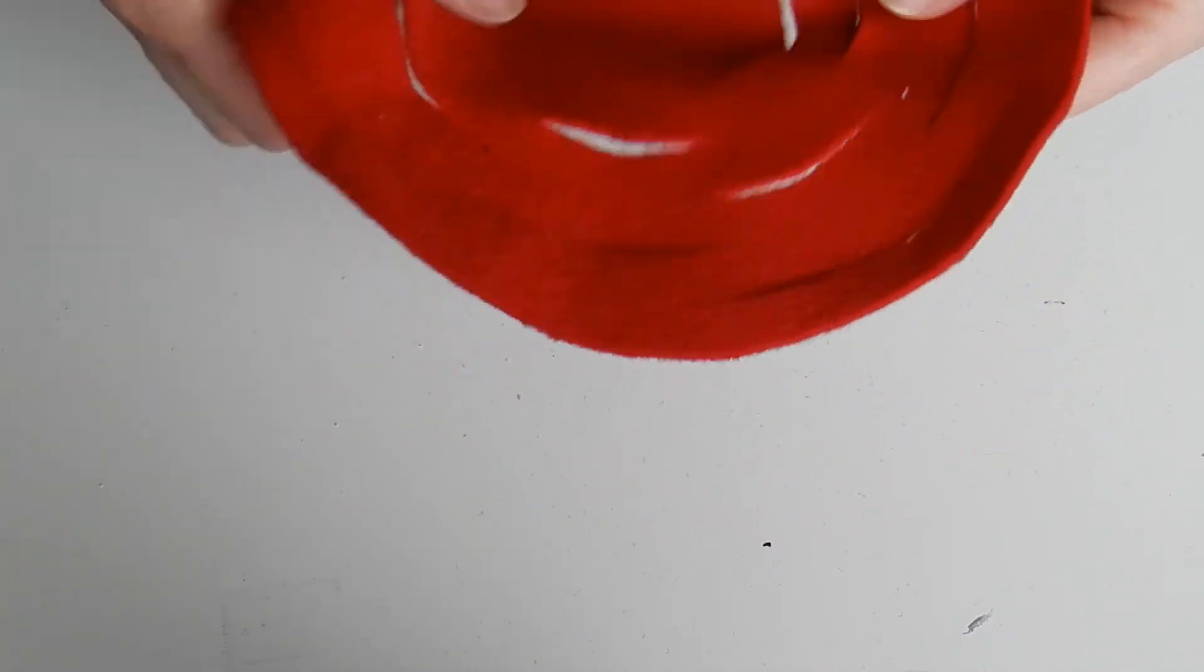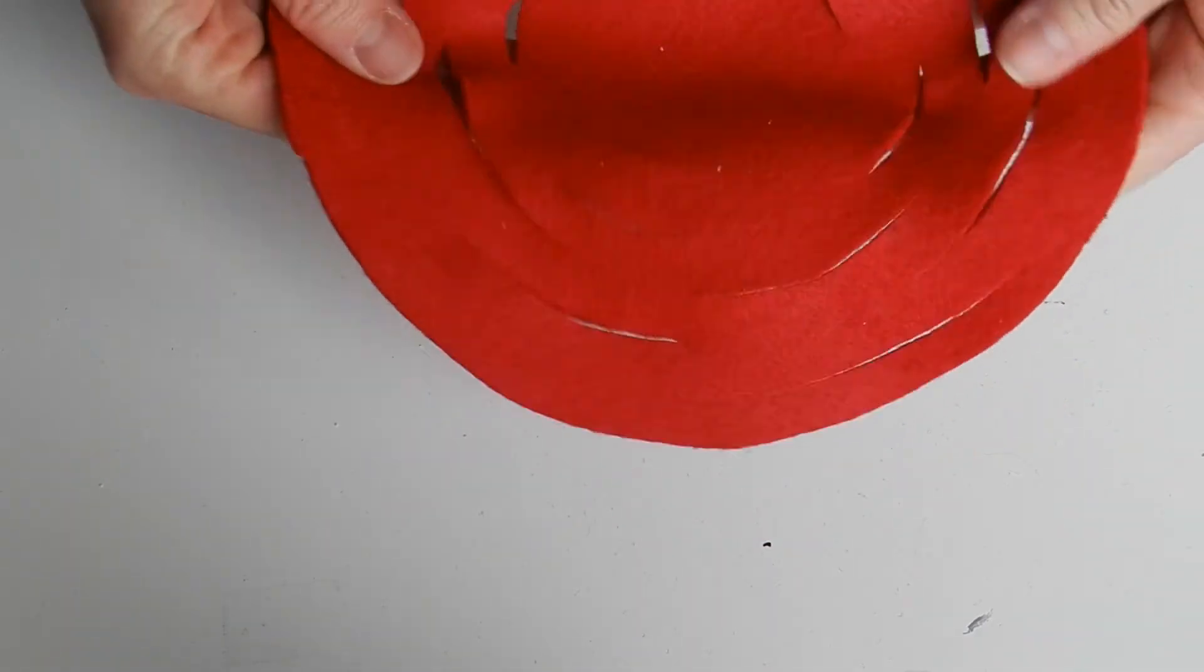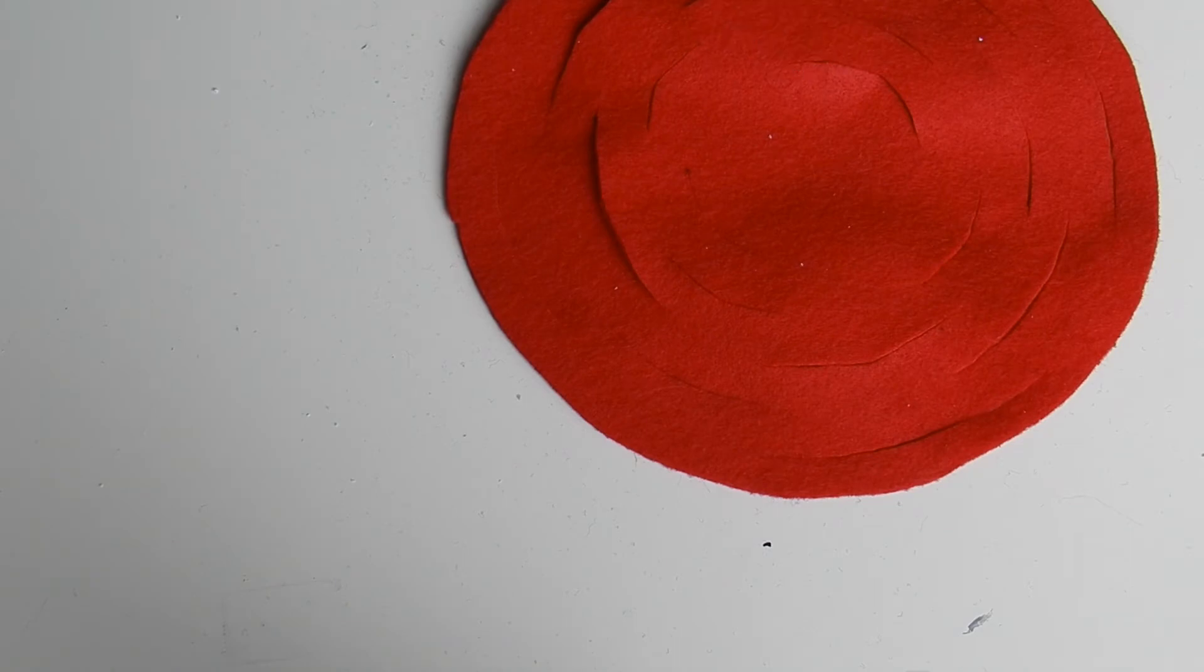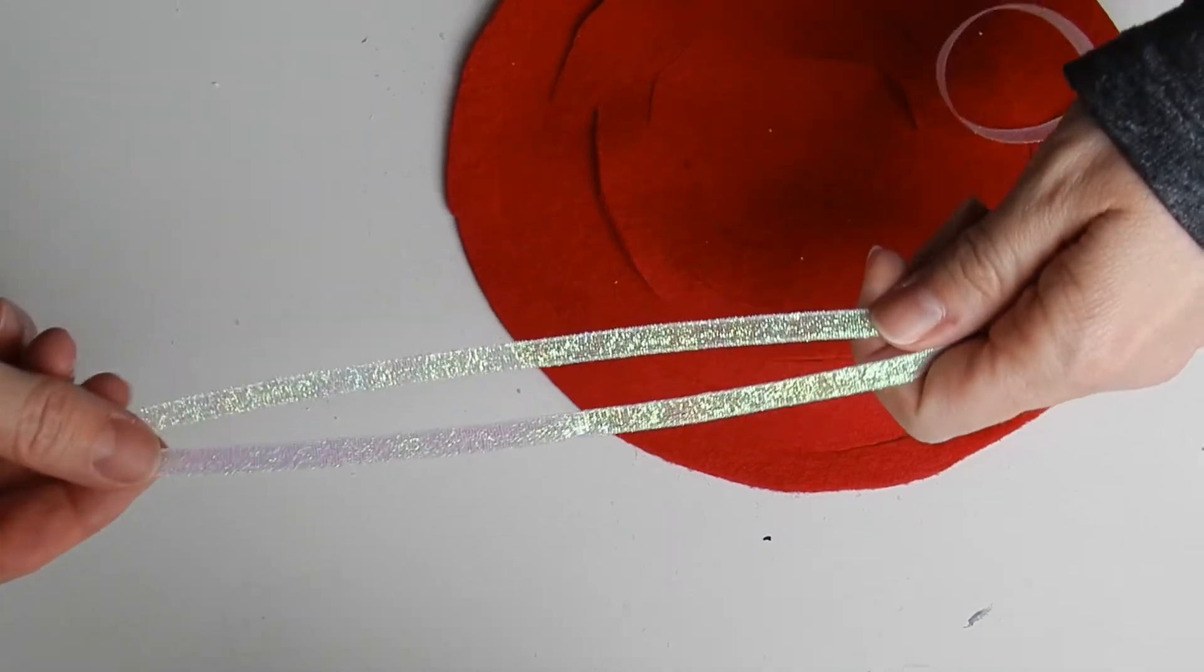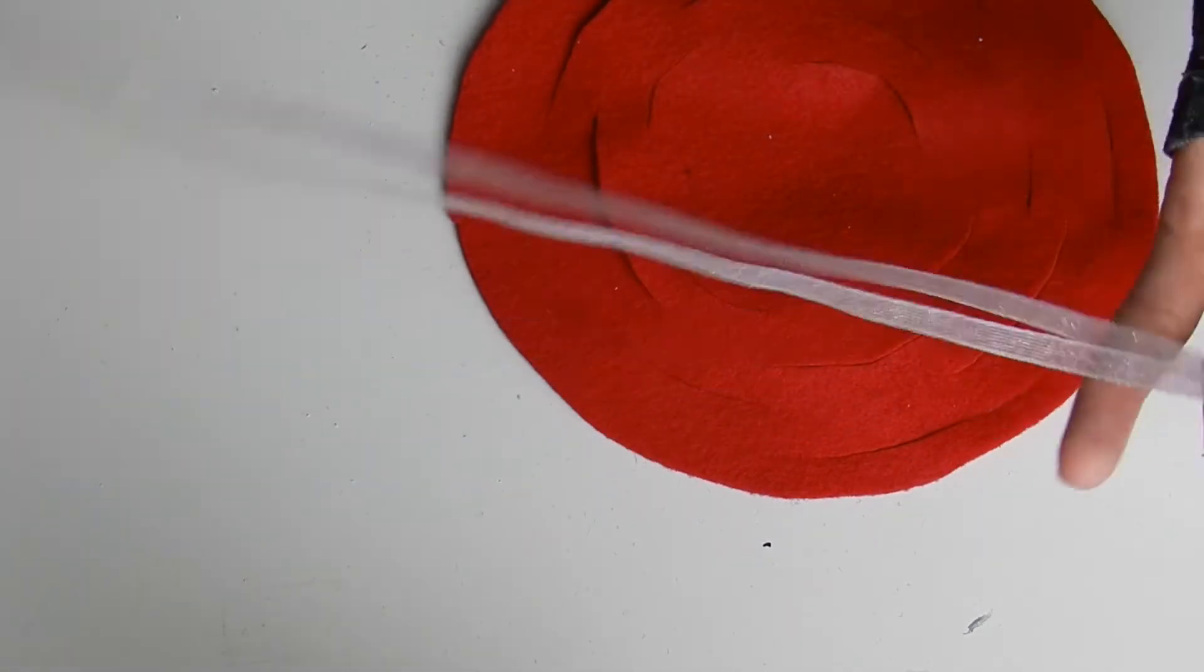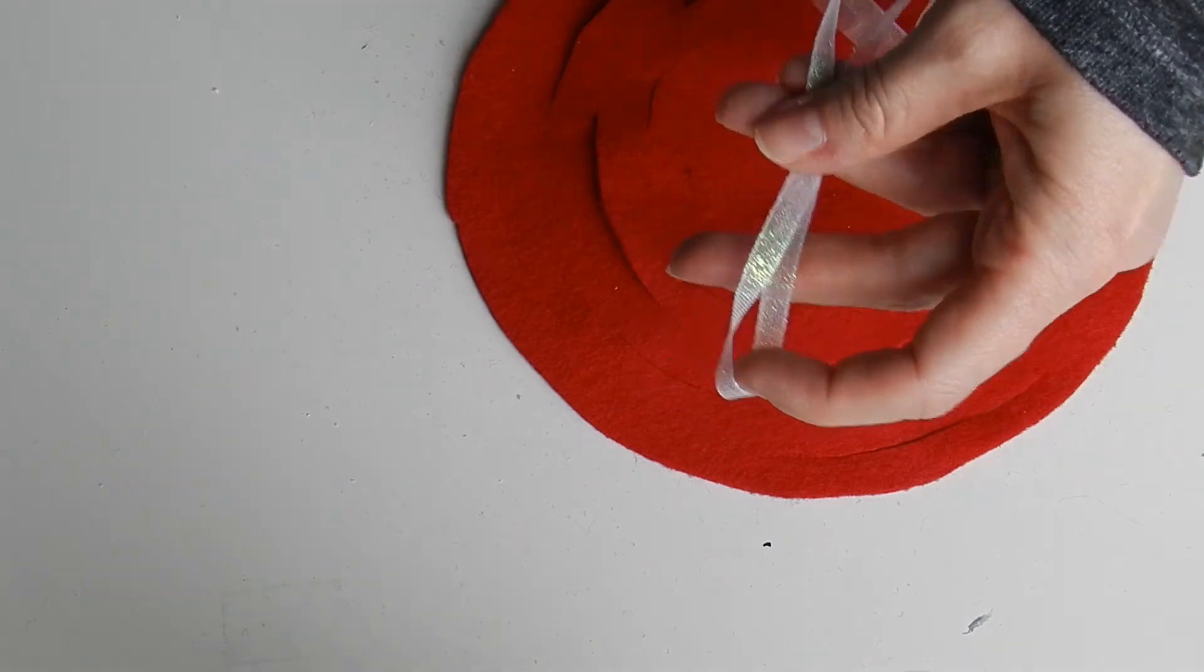Okay, once all of the lines are cut through your felt you're going to take your ribbon and fold it in half and clip the top so that you have two equal pieces.